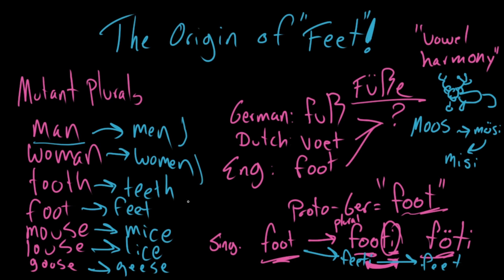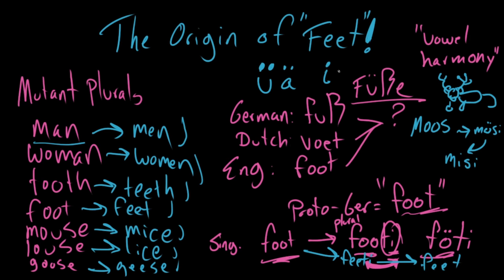So this is the broad pattern these mutant words all take — it's called umlaut mutation, or I-mutation. Not I like the sight organ, but I like the letter in English. These double dots that go over a vowel change its sound. Well, I hope that cleared some things up for you. You can learn anything. David out. Jake out.